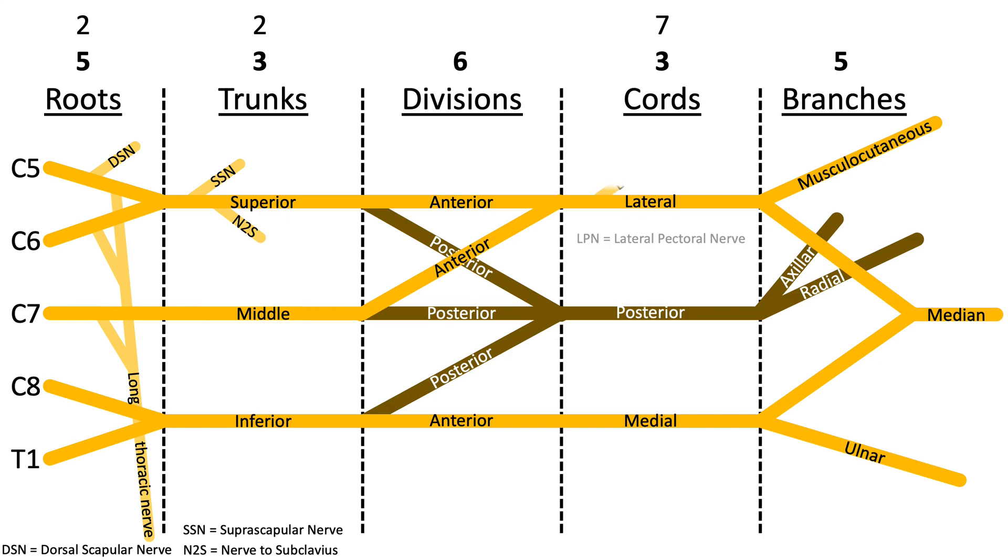From the cords there's going to be one collateral branch from the lateral cord, that's the lateral pectoral nerve, and then three from the posterior and medial cords respectively. From the posterior cord these include the upper, middle, and lower subscapular nerves. From the medial cord this includes the medial pectoral nerve and then two cutaneous nerves: the medial brachial cutaneous nerve and the medial antebrachial cutaneous nerve.